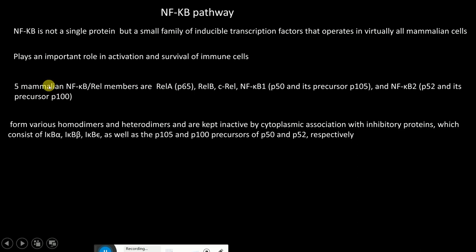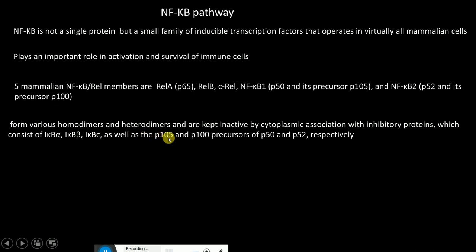These different mammalian REL members form various homodimers and heterodimers. Within the cell, these homodimers and heterodimers are kept inactive by inhibitory proteins, which consist of IKBα, IKBβ, IKBε, as well as the P105 and P100 precursors of P50 and P52 respectively.